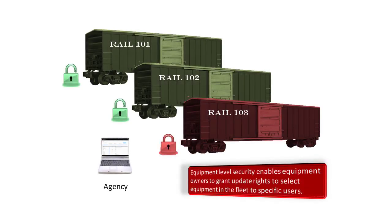Equipment level security enables equipment owners to grant update rights to select equipment in their fleet and restrict an agency or third party to update specific equipment. In addition to defining specific user rights, equipment owners have access to transaction logs where updates to equipment can be audited and reviewed.